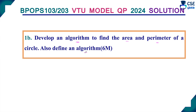Here, the definition for an algorithm will carry 2 marks, and if you are writing the algorithm steps to find the area and perimeter of a circle, it will carry 4 marks.